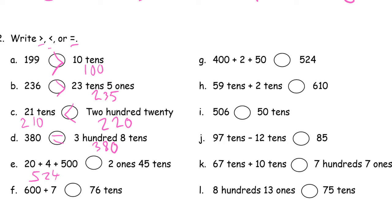And this — two ones and forty-five tens — is really set up to trick you. See, 2, 4, 5 and 2, 4, 5: it's set up to make it look like they're equal, but they're not the same numbers. Forty-five tens is four hundred fifty, and then the two ones makes it four hundred fifty-two. So four hundred fifty-two versus five hundred twenty-four — and five hundred twenty-four is greater than four hundred fifty-two.